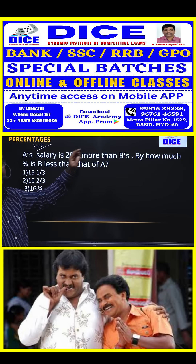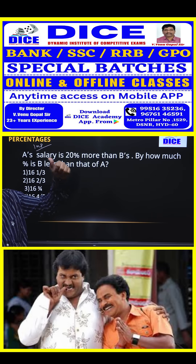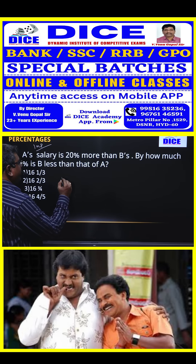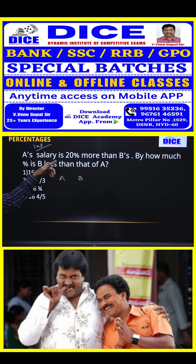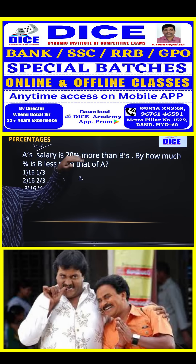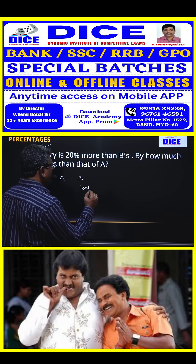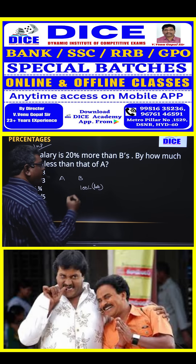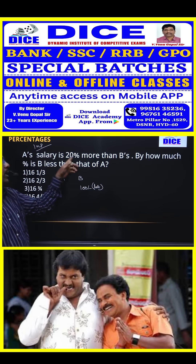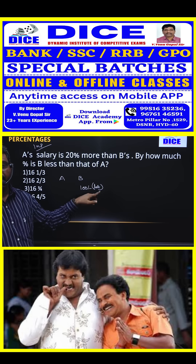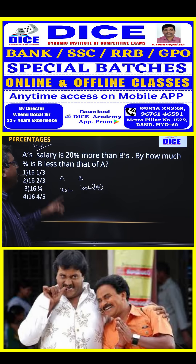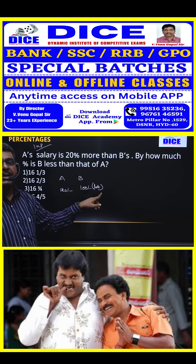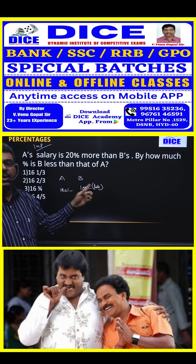A's salary is 20% more than B's. So if B is taken as 100, then A automatically gets 20% more — that is 100 plus 20 — 120 rupees. So A's salary is 120 rupees.